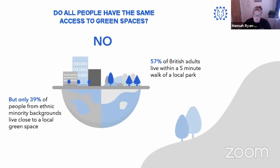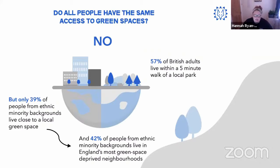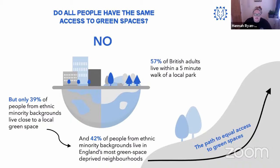Less than half of people from ethnic minority backgrounds have access to green spaces, compared to their white counterparts. Furthermore, 42% of people from ethnic minority backgrounds live in England's most green-space-deprived neighborhoods — areas with no green space or where it's inadequate, poorly cared for, or lacking investment. This limits their access to nature, which we know helps mental and physical well-being. The path to equal access to green spaces has a long way to go.